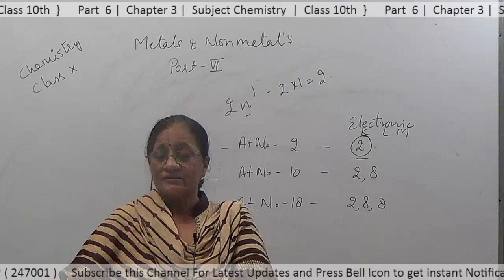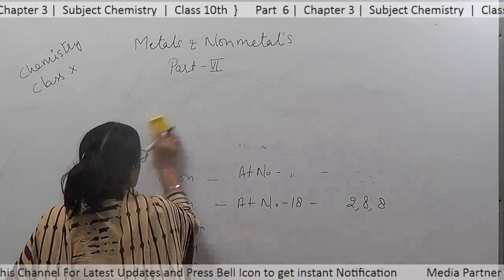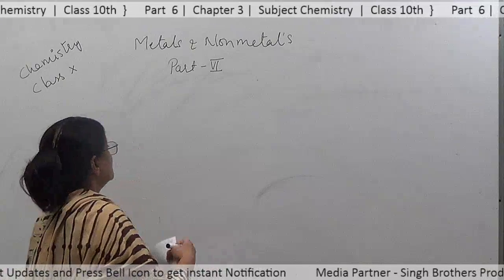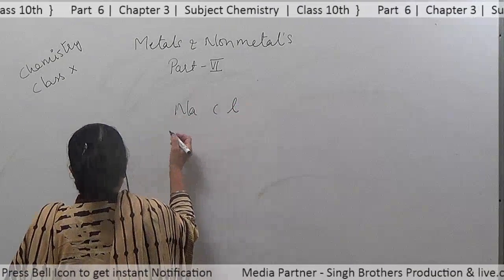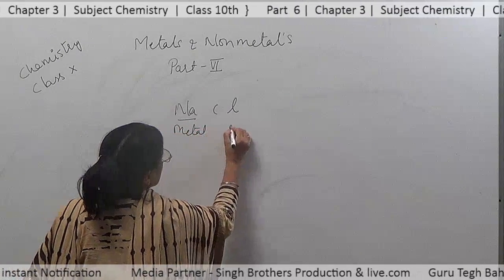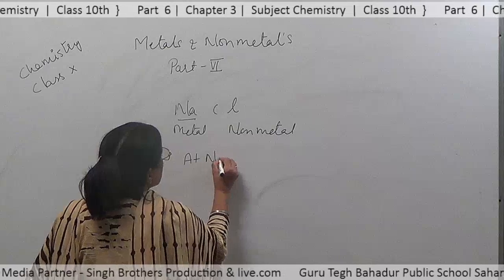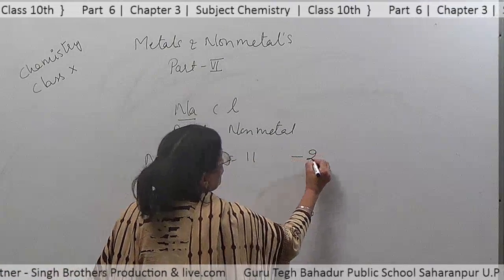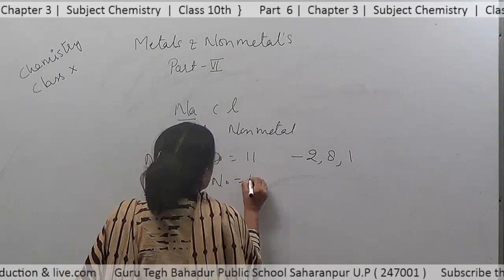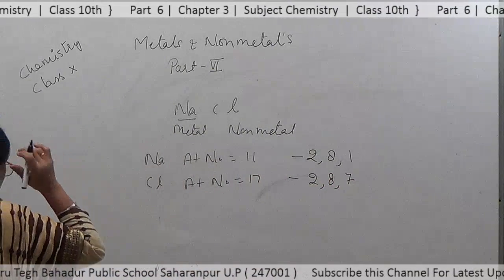If we take the example of the formation of sodium chloride, NaCl — sodium is the metal and chlorine is the non-metal. Sodium (Na) has atomic number 11, so its electronic configuration is 2, 8, 1. Chlorine has atomic number 17 and electronic configuration 2, 8, 7.